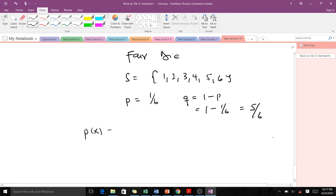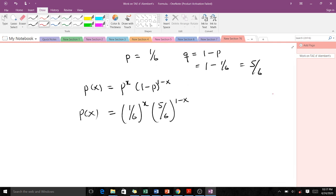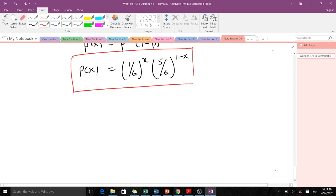So our distribution P(x) will be given as—remember, this is given as p^x times (1-p)^(1-x). In this case, our p is 1/6 to the x, and our 1-p is 5/6 to the (1-x). P(x) or f(x) is the same thing, so this becomes the distribution.